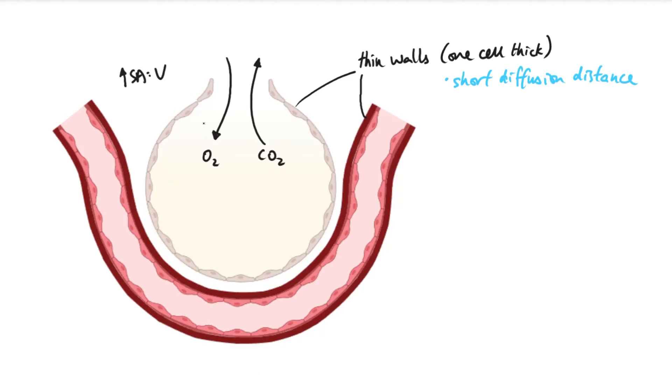Another thing is that the alveoli, because there's so many of them and they've got a spherical shape, they've got a high surface area to volume ratio, which again speeds up the rate of diffusion.